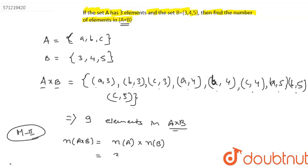So if we apply the formula, what we get? We have given that A has 3 elements and the number of elements in B is 3,4 and 5, that is also 3. So the answer should be 9.